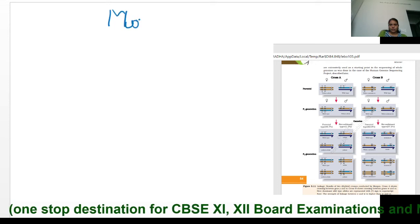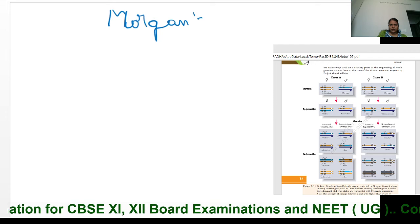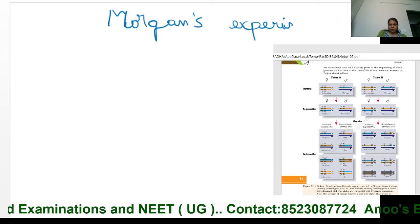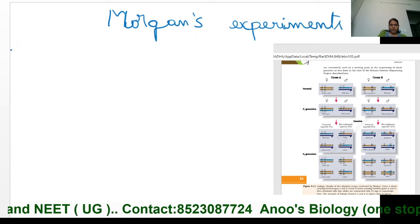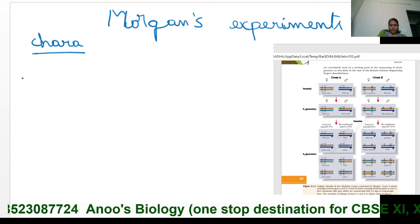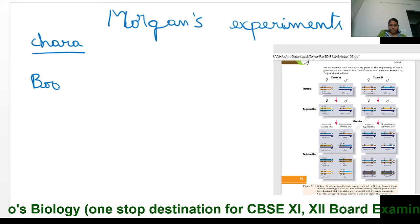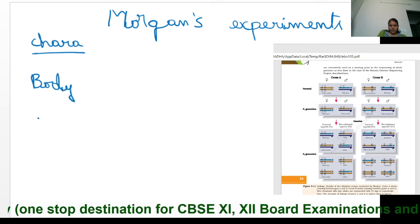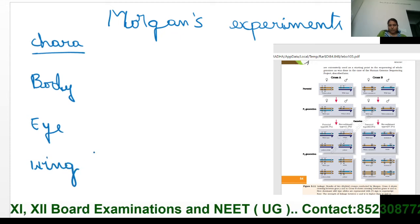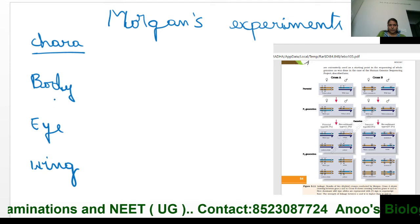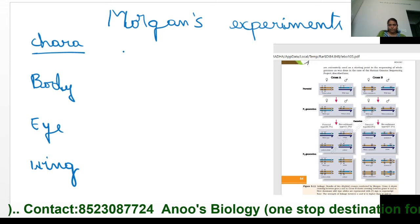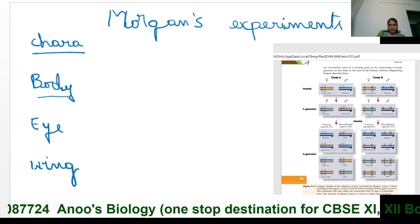Morgan has taken three characters to conduct experiments in Drosophila. Those three characters are body color, eye color, and wing size. All three genes responsible for the expression of these three characters are present on the same chromosome, that is the X chromosome.